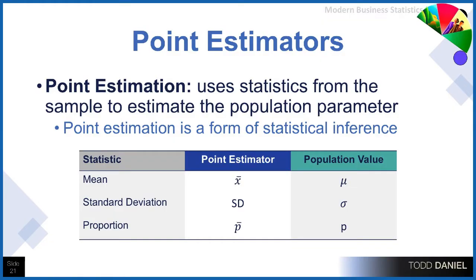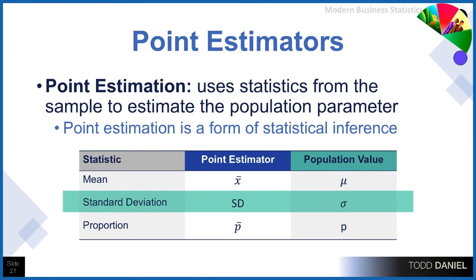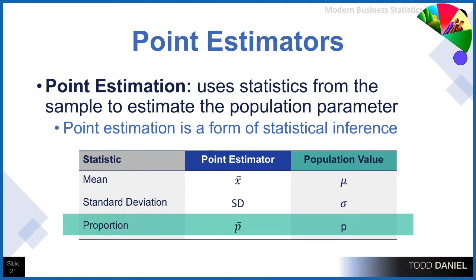Point estimation uses statistics from the sample to estimate the population parameter, and in this case it's really a form of statistical inference — we're taking what we learned from the sample and inferring that that is what is true of the population. Point estimators look like these: we have X-bar for the mean, and the population value is mu. For standard deviation, abbreviated as SD or lowercase s, the population value is sigma. For proportions, which we're going to learn about next week, the point estimator is P-bar, and the population value for a proportion is P.